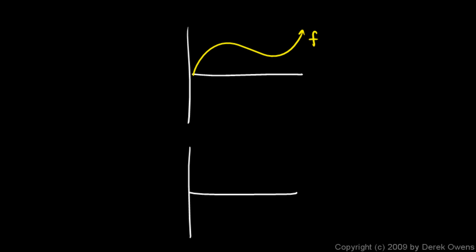So right here for example, and right here, my f graph has a slope of 0. So if I come down here to those corresponding points on the graph below, my derivative function will have to have a value of 0 at those points, so I can plot those points.